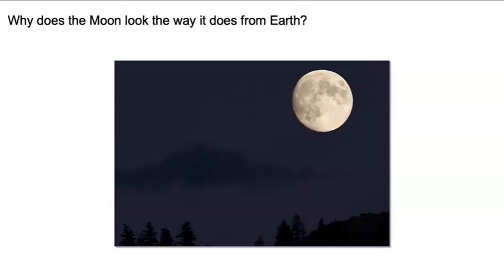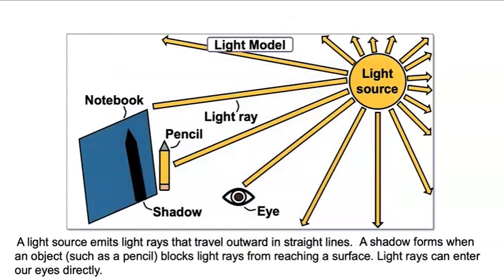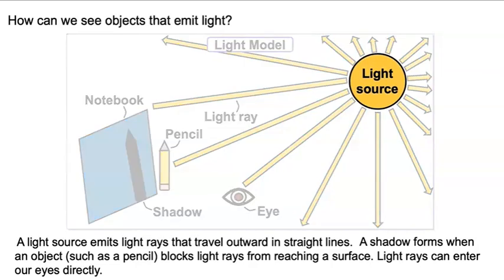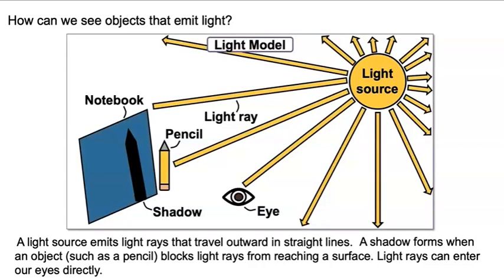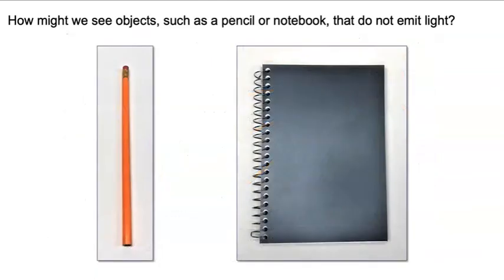To answer this question about the moon's appearance let's gather information about how we see objects on Earth. We created this model to help us understand light. How can we see objects that emit light? The objects emit light rays that travel into our eyes right? But not all objects emit light.